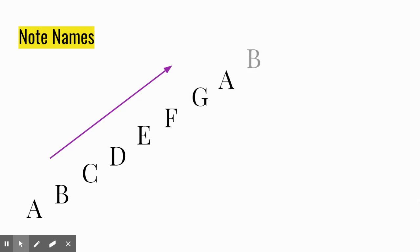After G, we restart the pattern at A. Notice now how some notes repeat names. Notes with the same name and a different sound will look different on your staff.